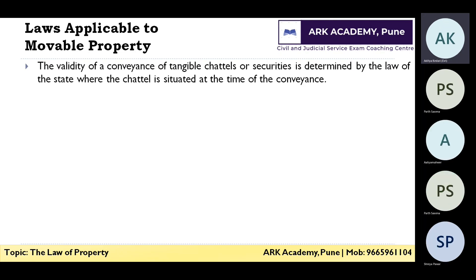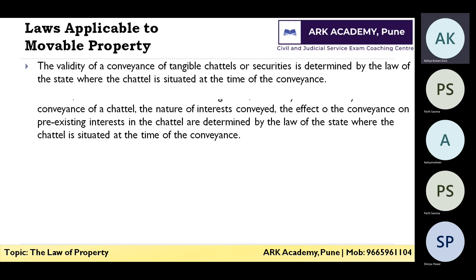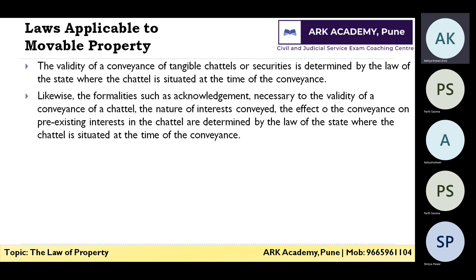The validity of conveyance of tangible chattels or securities is determined by the law of the state where the chattel is situated at the time of the conveyance. So wherever the tangible property was at the time of conveyance — whether it was gold, cash, a car, or a two-wheeler — the law of that country can apply. Similarly, formalities necessary to the validity of a conveyance of a chattel, the nature of the interest conveyed, and the effects of the conveyance on pre-existing interests are all determined by the law of the state where the chattel is situated.